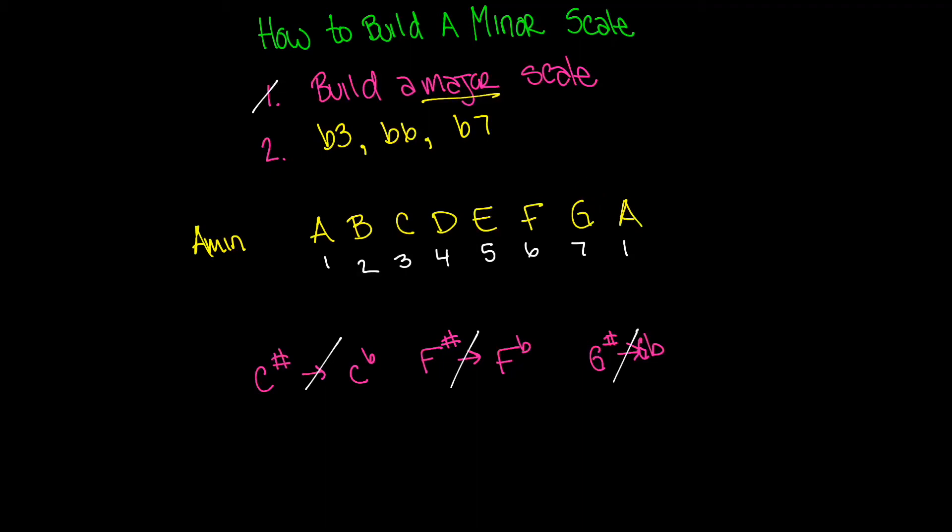Now in this instance, you might look at this scale and go, wait a minute. Isn't this the thing that you just wrote out in the beginning? You said write the skeleton out, and then build the major scale, and then go ahead and flat three, six, and seven. You just sort of did the work and then you undid it.